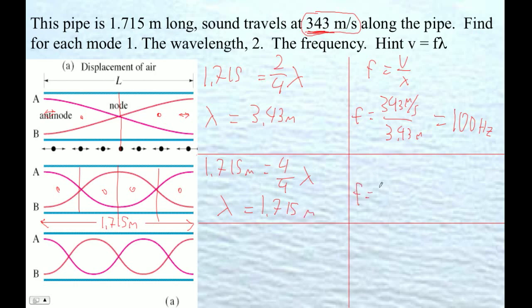And now our frequency is 343 meters per second over 1.715 meters, and that ends up being 200 hertz. 343 divided by 1.715 is 200 hertz.